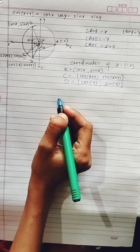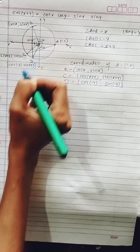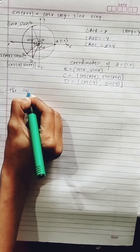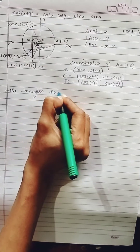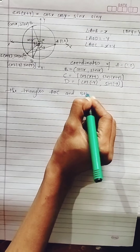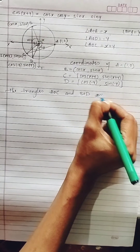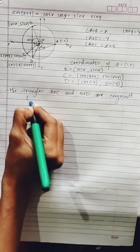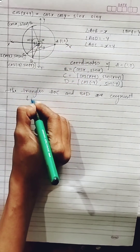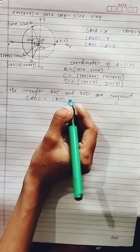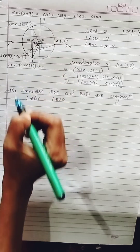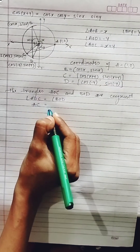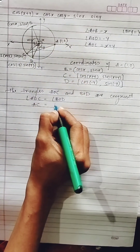We observe that two triangles AOC and BOD are congruent. Congruent means both triangles are equal. Angle AOC equals angle BOD, so their corresponding sides must be equal — that is, side AC equals side BD.